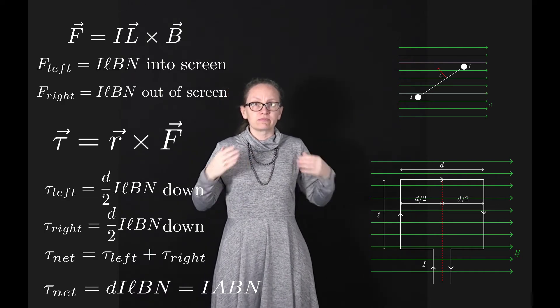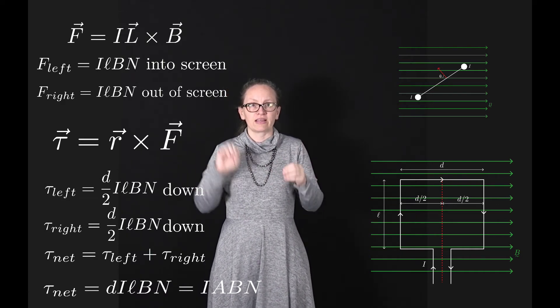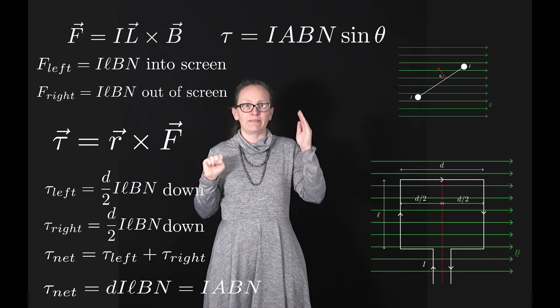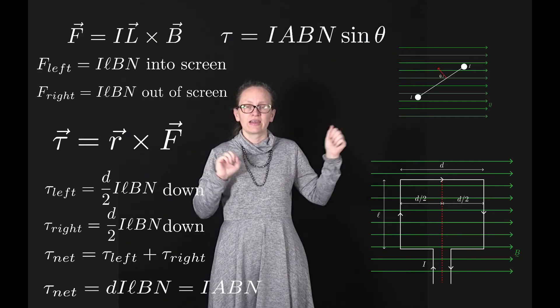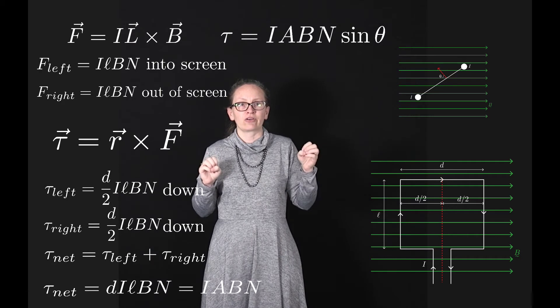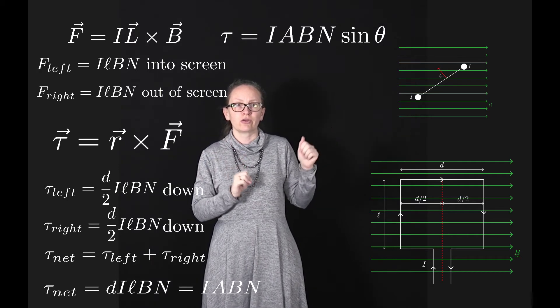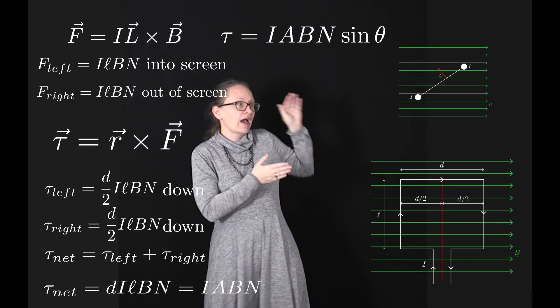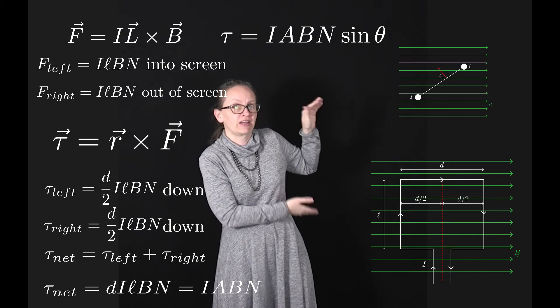We can write the torque as torque equals I A B N sine theta, where sine theta is the angle between the normal to the loop and the magnetic field, as shown in this figure.